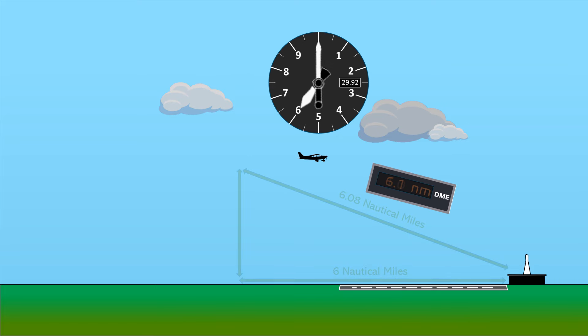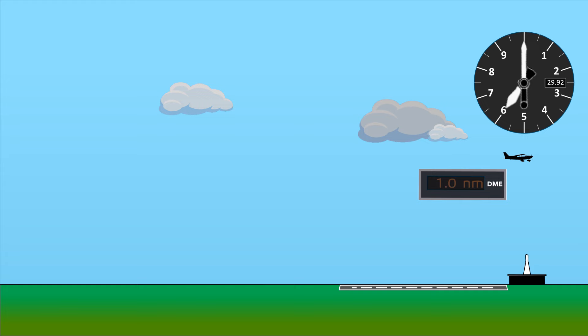This gets more pronounced as we fly directly over the station. Here, our ground distance is 0, but at 6,000 feet up, we're actually 1 nautical mile away from the station. So that's what the DME will show.